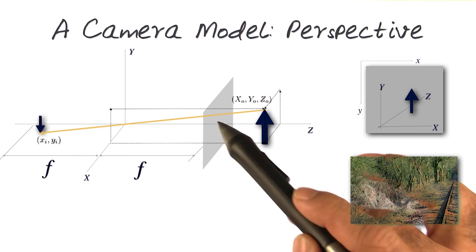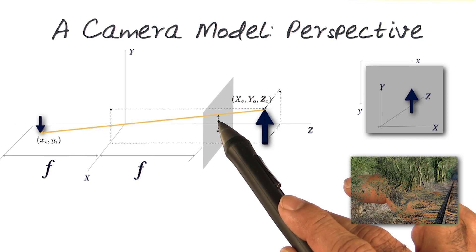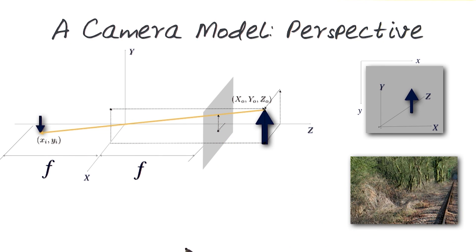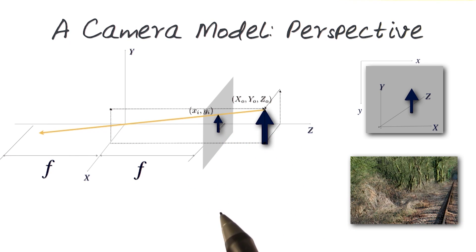Which basically means I can move the sensor here. And if I move the sensor here, I can put the xi and yi values on this side. One interesting aspect of the simplification is now I can see the image to be also upright as the object is.